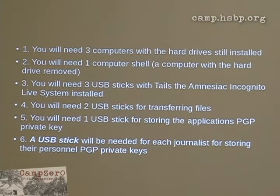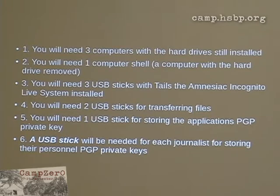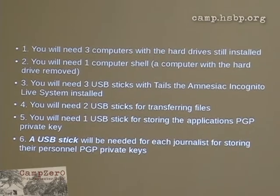Then you will have three USB sticks with Tails, which is a live CD created by people affiliated with the Tor project. This live CD pushes all your traffic over Tor, which is pretty nifty. It has memory scrubbers when you shut down, a metadata reduction toolkit and all that stuff. Then you need two USB sticks for transferring files, and one USB stick for storing the application's PGP private key, which is kind of odd. And then also one for storing the personal PGP private keys.